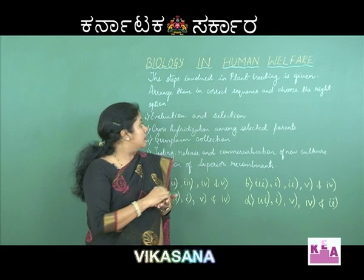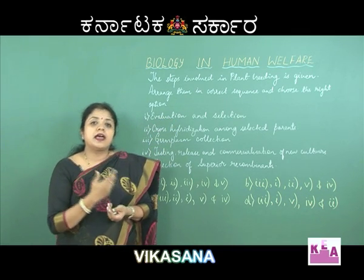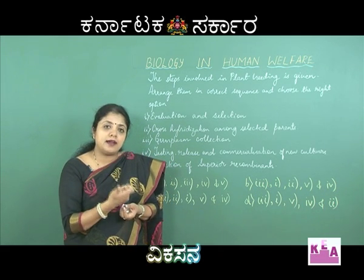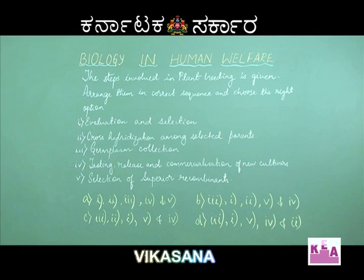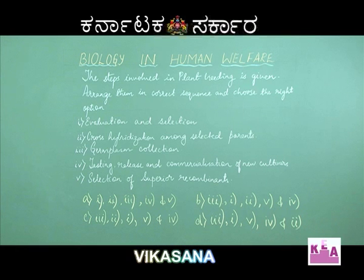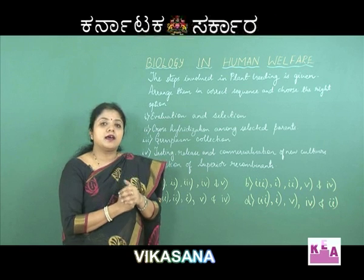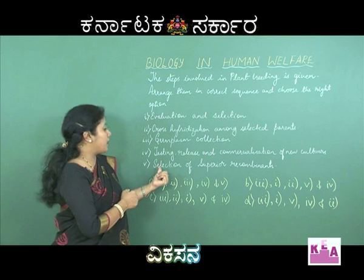Later, they will have to evaluate and do the selection — that is, evaluate each variety for the desired character and select a plant as a parent which has a desirable character. Then they will have to do the cross hybridization among the selected parents.